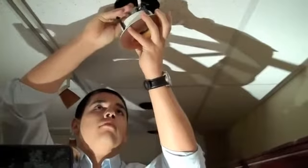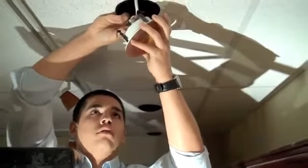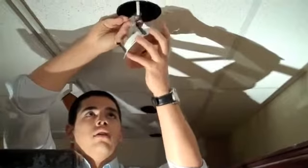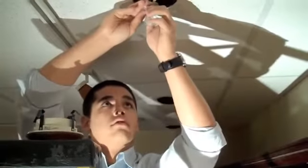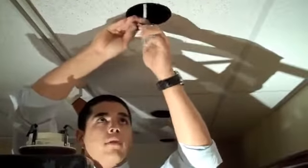Then you're going to reach up and slowly work the fixture out. If you manage to get the trim out without the lamp, you're fine. So then you can just reach up and pull this lamp out.